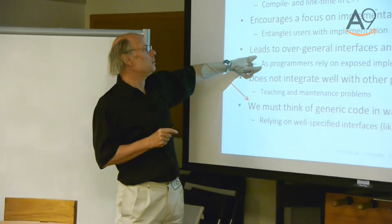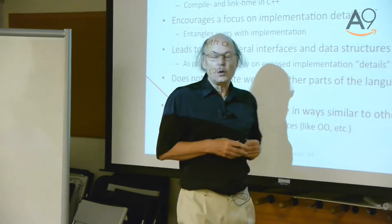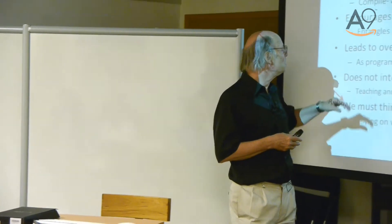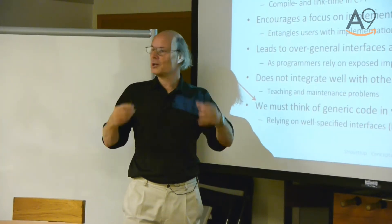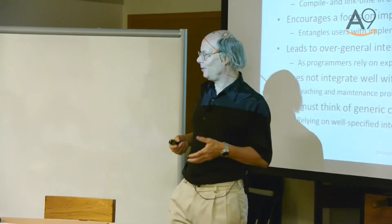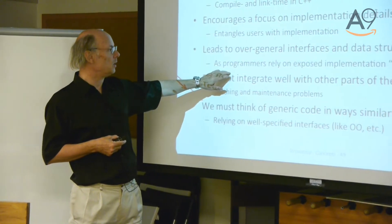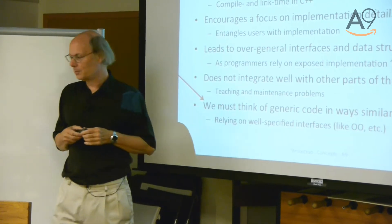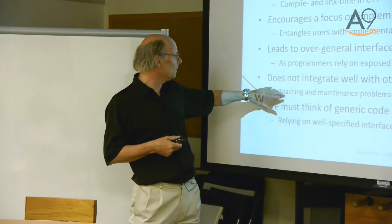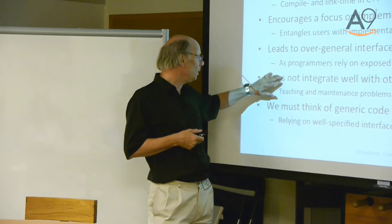This leads to overly general interfaces and data structures. I couldn't quite understand why people used all of these pairs, tuples, and variadic templates. Basically, they don't want to fix the interface - they want the most general implementation that can do everything with everything, because they don't want to constrain their users. So you get implementations that are not just generic but dramatically weird, taking everything and trying to make sense of it.